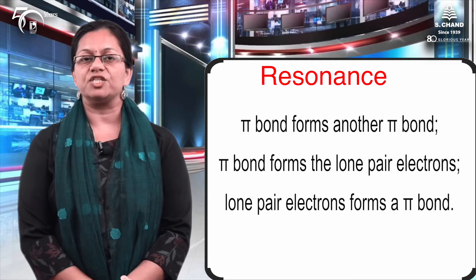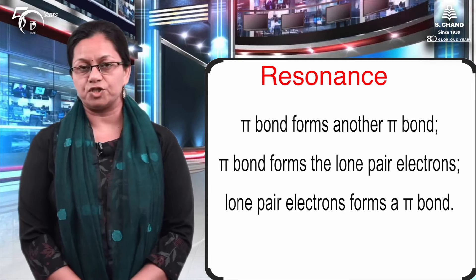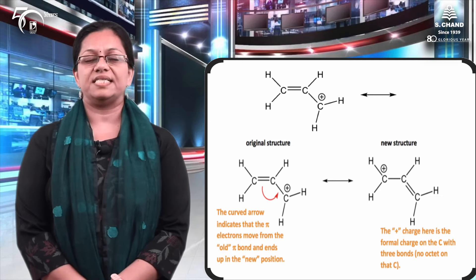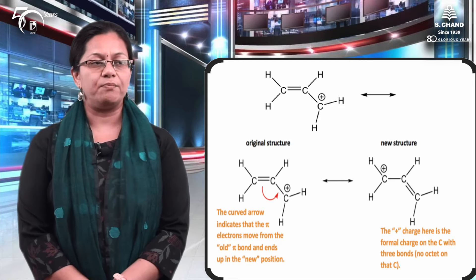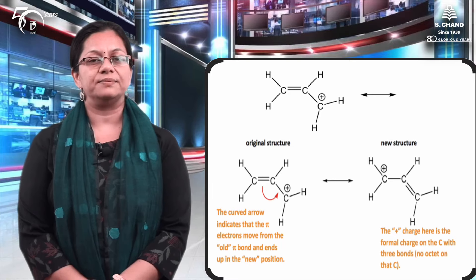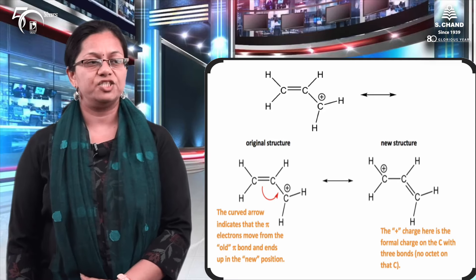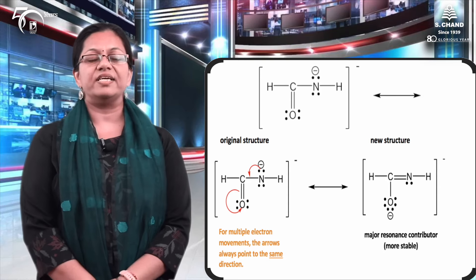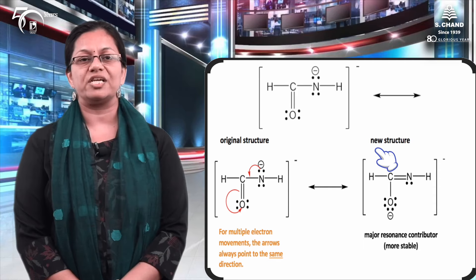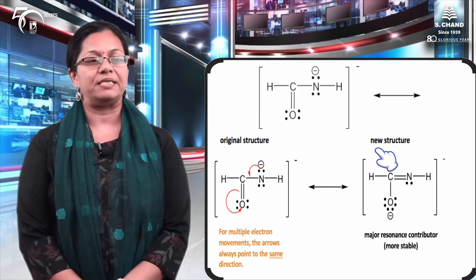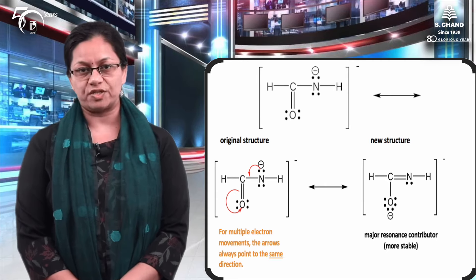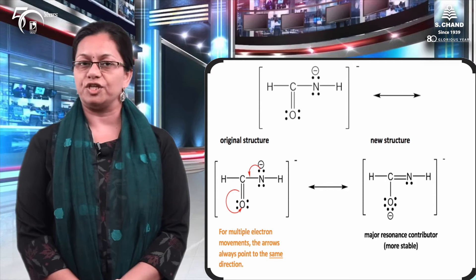The resonating structures possible for a given structure are only those which have a change in the position of electrons, lone pairs, or multiple bonds. For example, propene has a double bond between two carbon atoms and two possible resonating structures where the double bond is moved from one carbon to another, with corresponding changes in electrons. Similarly, an amide structure with a C–O–N–H bond also shows resonating structures — the original and new structures have the same number of electrons, the same number of sigma bonds, and the same number of multiple bonds, with only the position of electrons changed.